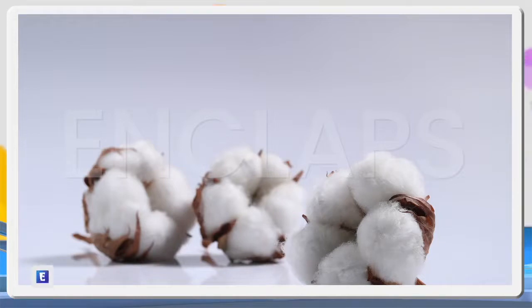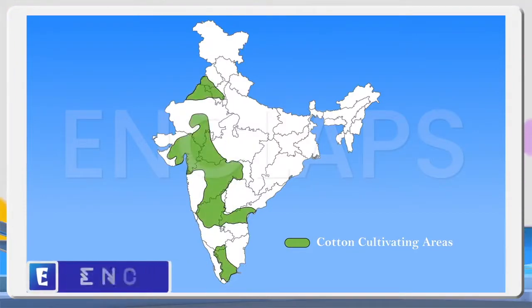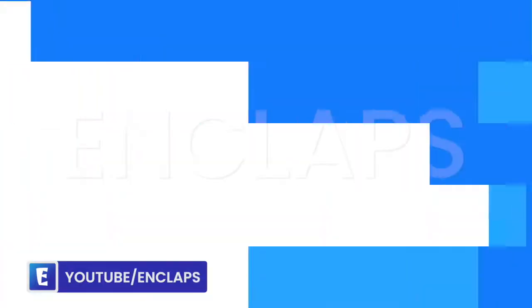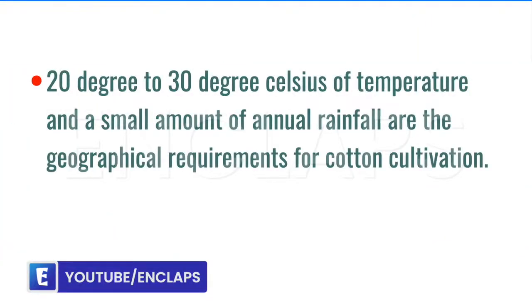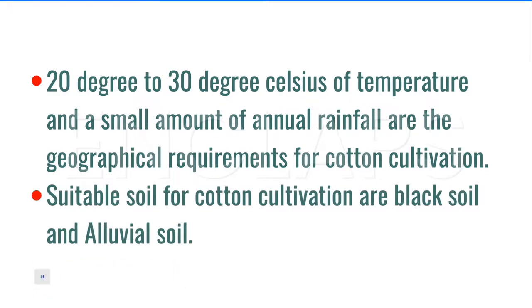First of all, we discuss about cotton cultivation and cotton textile industries. What are the suitable conditions for the production of cotton? Frost-free growing seasons, 20 to 30 degree Celsius of temperature, and a small amount of annual rainfall are the geographical requirements of cotton cultivation. Suitable soils for cotton cultivation are black soil and alluvial soil. Cotton is used worldwide in textile sectors, so cotton is known as a universal fiber.